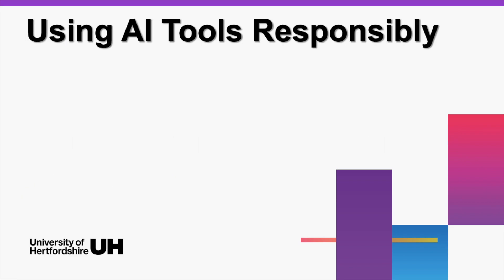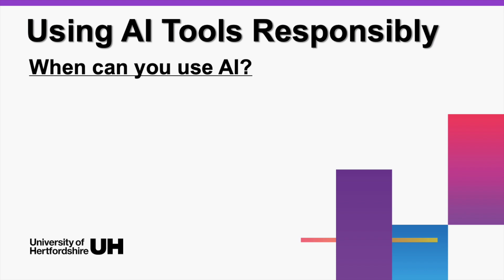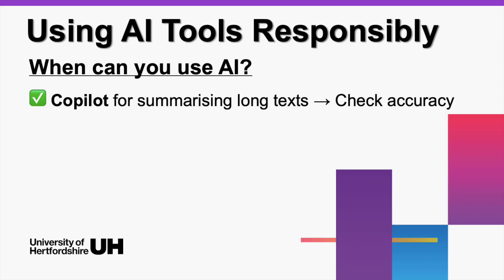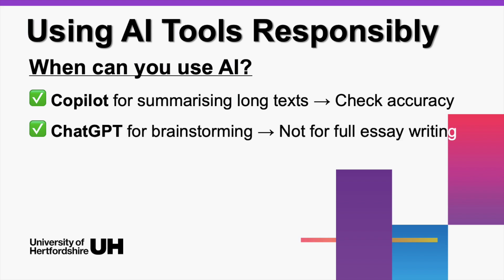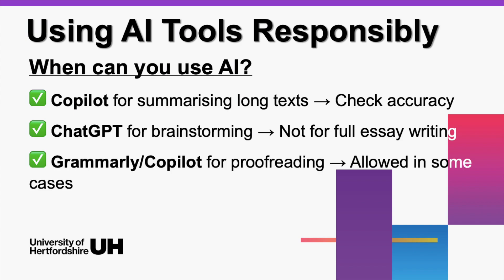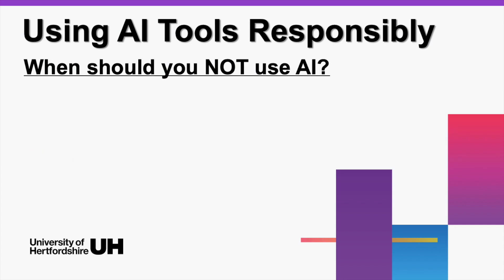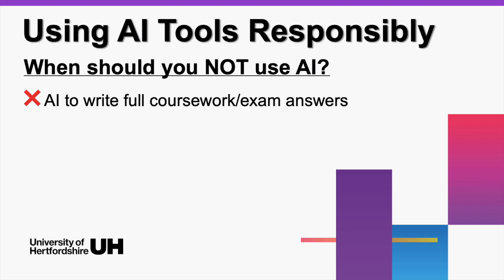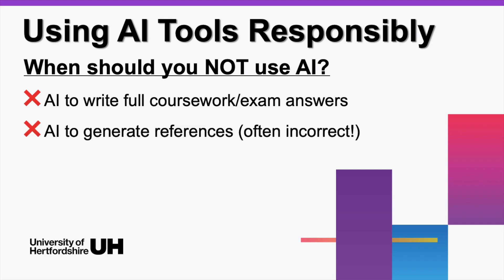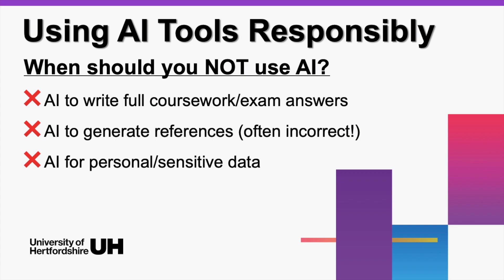Let's talk about how to use AI tools responsibly. When can you use AI, and when should you avoid it? You can use Copilot to summarize lecture notes, but make sure you check accuracy. ChatGPT for brainstorming essay ideas — not writing them. Grammarly or Copilot to proofread grammar and spelling. Some bad uses: letting AI write full coursework or exam answers, using AI to generate fake references — seriously, it makes them up — or entering personal or confidential data into AI tools. If you're unsure whether AI is allowed, just ask your lecturer. It's better than getting caught for misconduct.